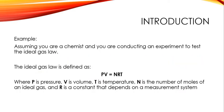To further discuss the definition of numerical analysis, here is a simple example. Assuming you are a chemist and you are conducting an experiment to test the ideal gas law. The ideal gas law is defined as PV equals NRT, where P is pressure, V is volume, T is temperature, N is the number of moles of an ideal gas, and R is the constant that depends on the measurement system.